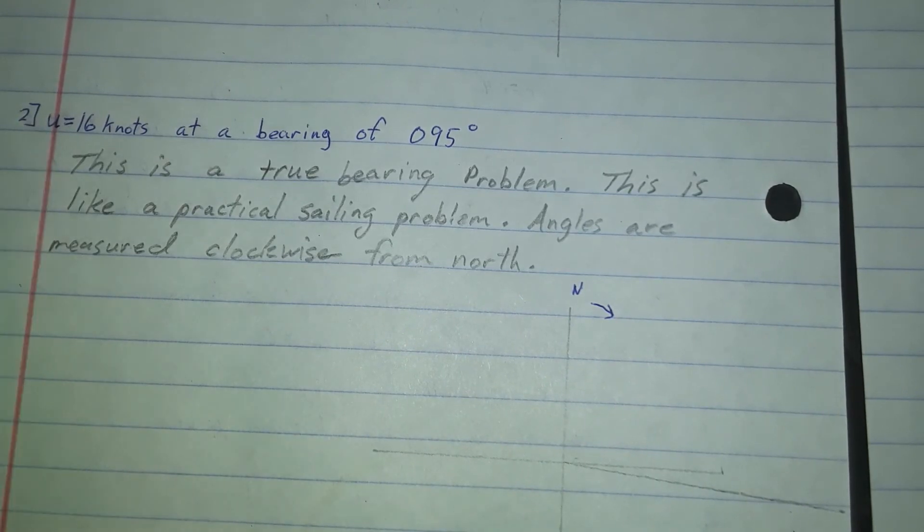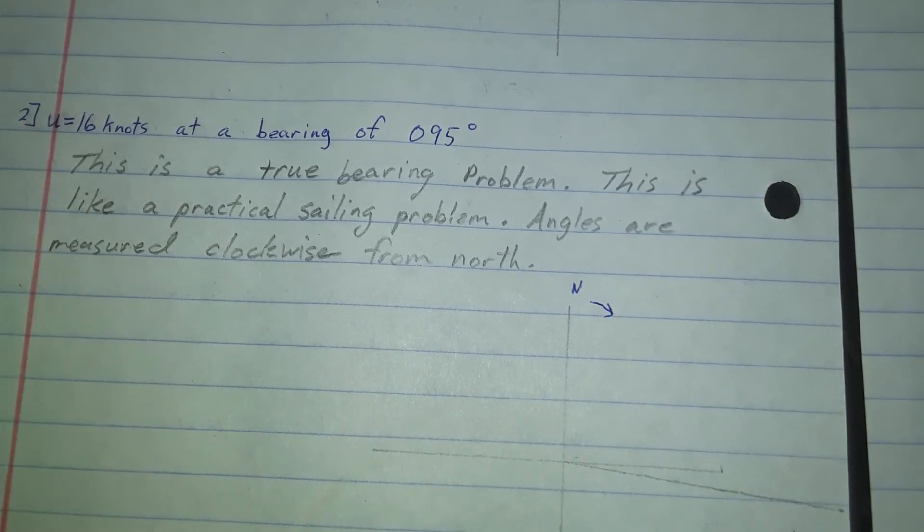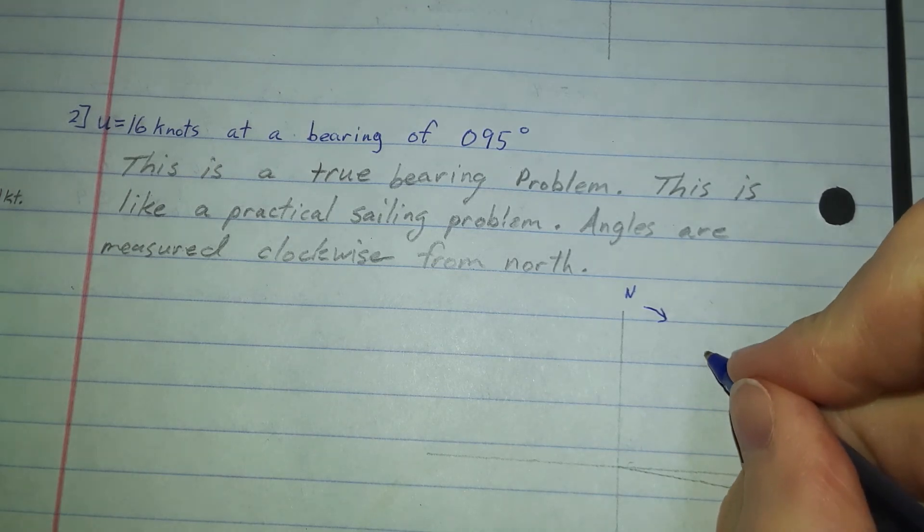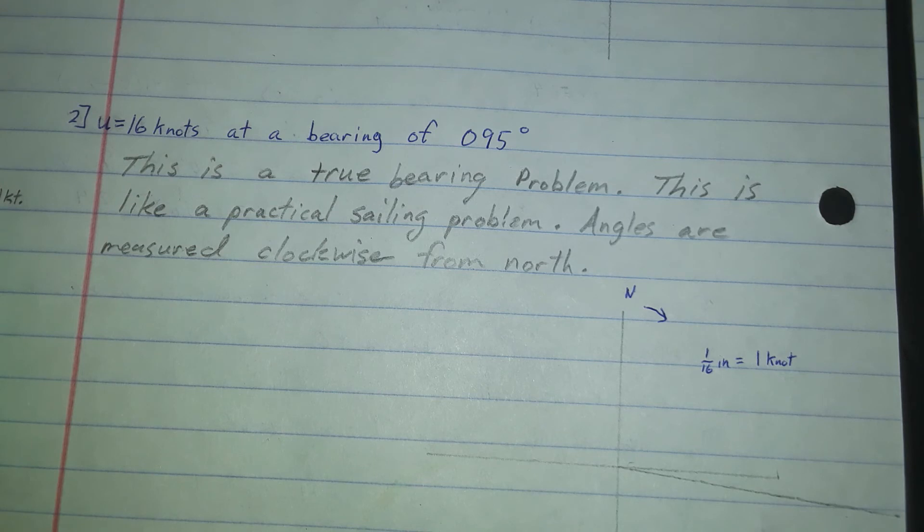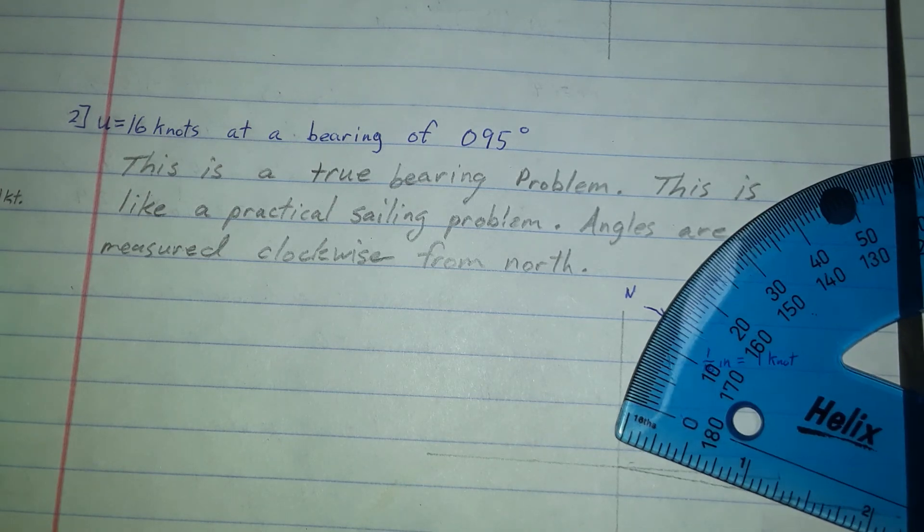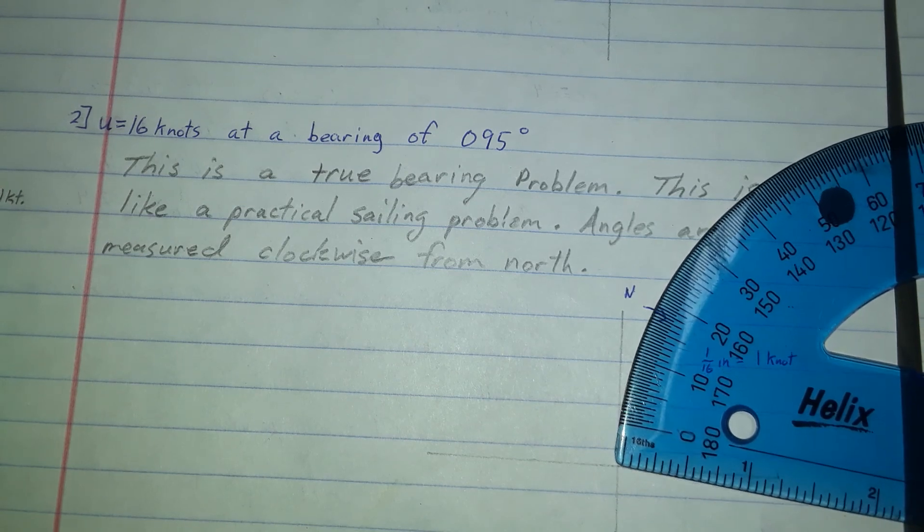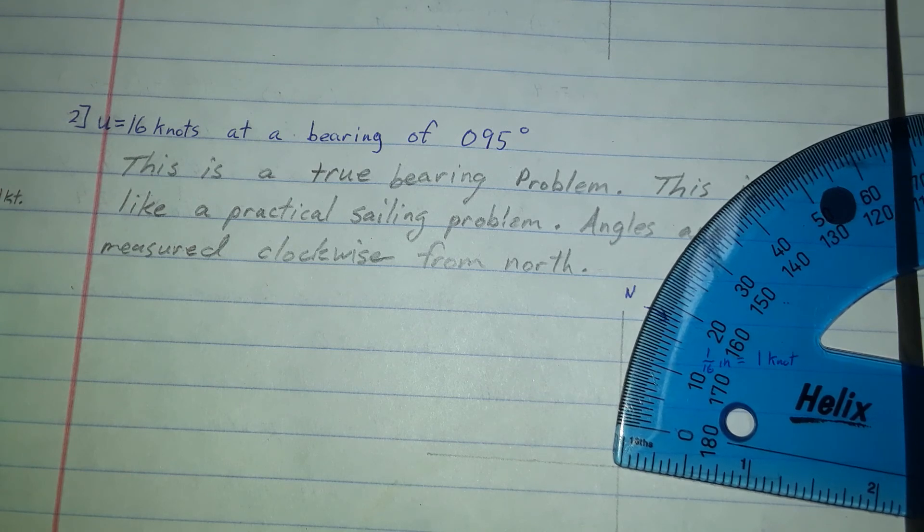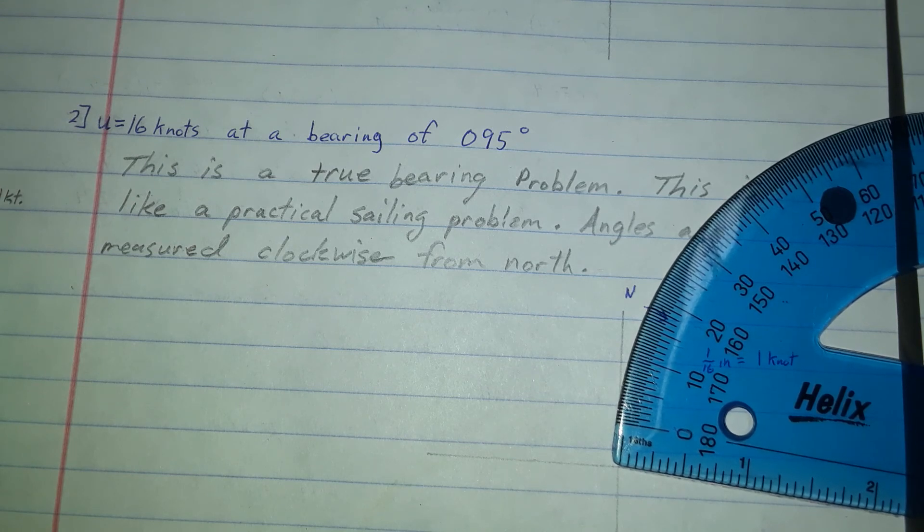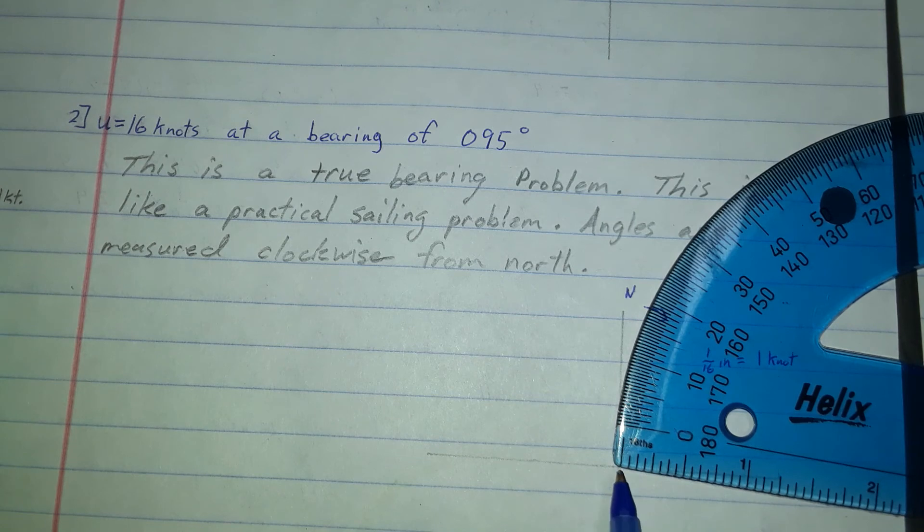I have this line right here. I'm going to darken that in once I find out the length that I need the magnitude of my vector. I'm going at 16 knots. This time the scale that I'm going to choose to use is a sixteenth of an inch equals one knot. I'm using a different scale this time. I'm going to measure right down this segment that I drew here. I'm going to make sure that my zero mark is where the origin is here.